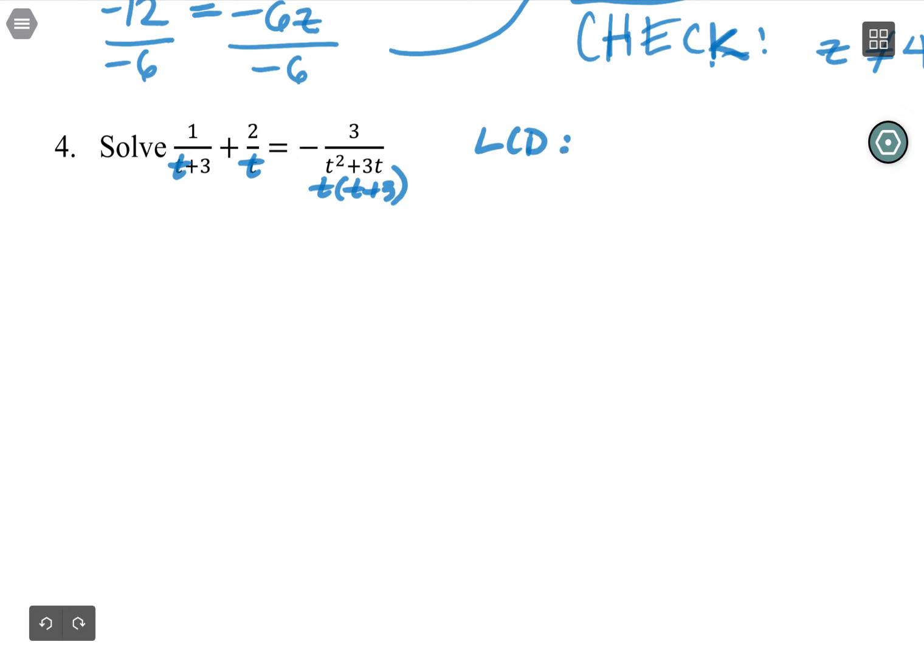So my LCD, I'm going to just work my way left to right. The first fraction has t plus three as a factor. If you need the reminder, you can say that's times one times one. The t and the three are not separate. They are terms. The t plus three is altogether one factor of the denominator. When I move on to fraction number two, I'm missing a t. So I add it to the list. And then when I move to the right hand side, I've already got both the t and the t plus three. So I'm done. So I'm multiplying by t times t plus three.